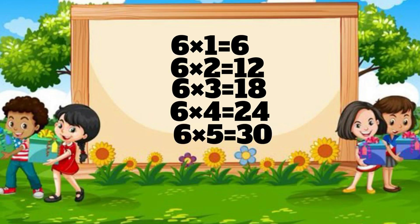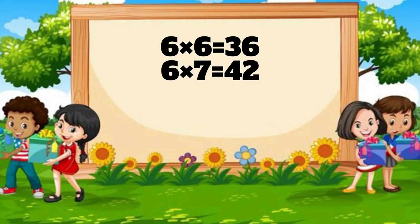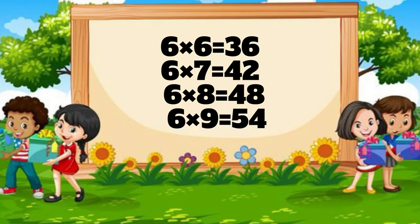Six fives are thirty. Six six are thirty-six. Six sevens are forty-two. Six eights are forty-eight. Six nines are fifty-four. Six tens are sixty.